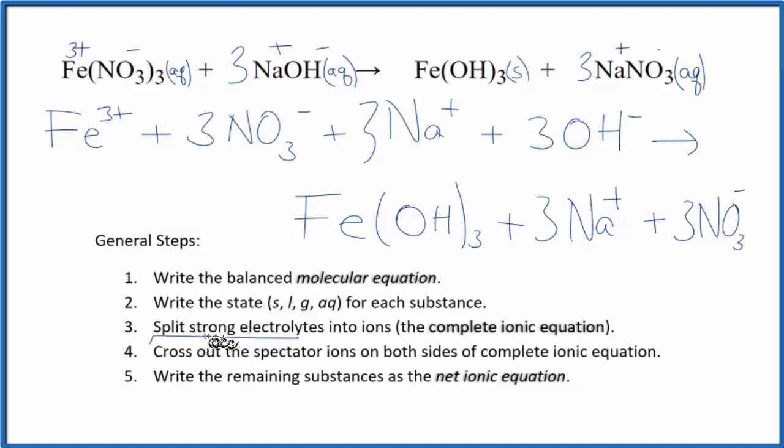Once we've got these split up, the strong electrolytes, we can cross out spectator ions. These appear on both sides of that complete ionic equation. So as I look at this, I see I have three nitrate ions here and three nitrate ions here. Just cross those out. Three sodium ions, three sodium ions.